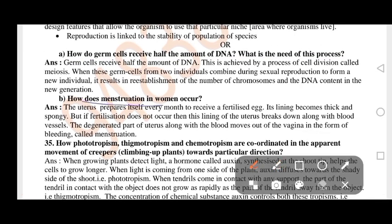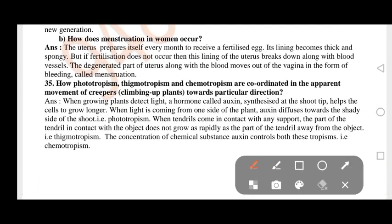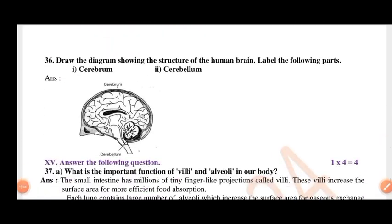How does menstruation in women occur? How are phototropism, thigmotropism and chemotropism coordinated in the apparent movement of creepers? Climbing up plants, creepers grow towards a particular direction. Draw the diagram showing the structure of the human brain and label the following parts.